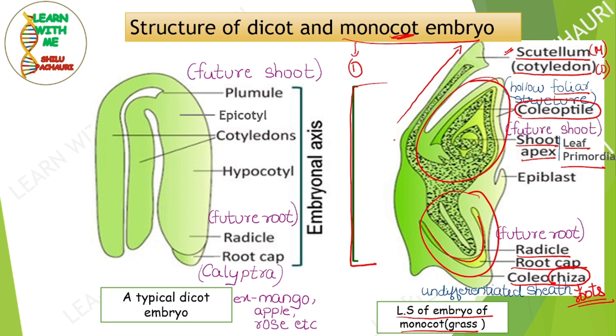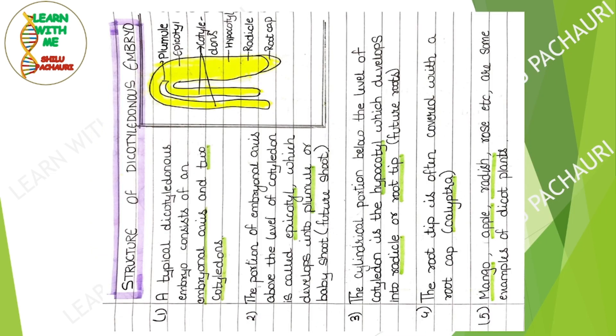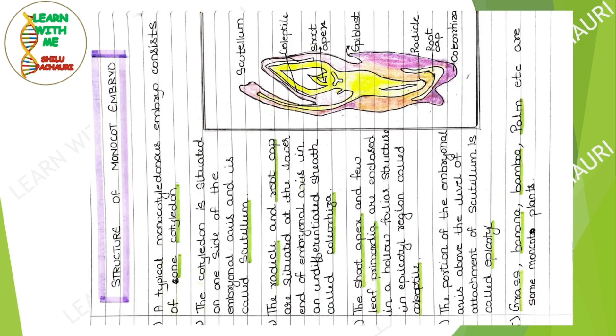Examples of monocot plants include grass, banana, and bamboo. These are the handwritten notes on dicotyledonous and monocotyledonous embryos. If you want these notes in PDF format, you can connect to our Telegram channel — the link is in the description box as well as in the channel description.